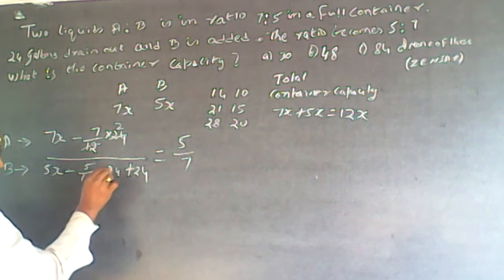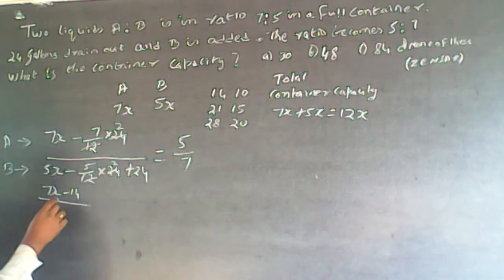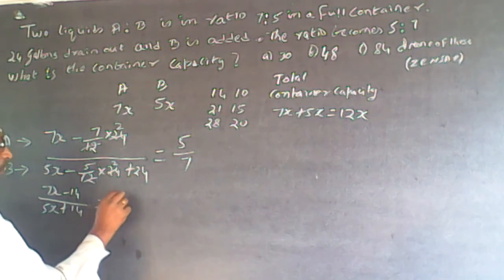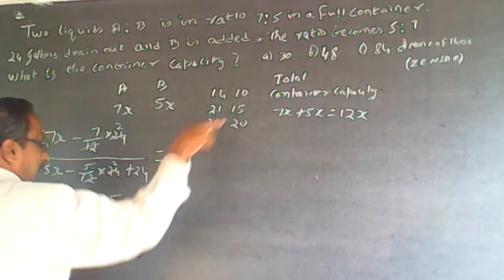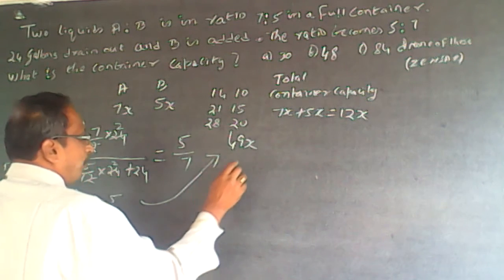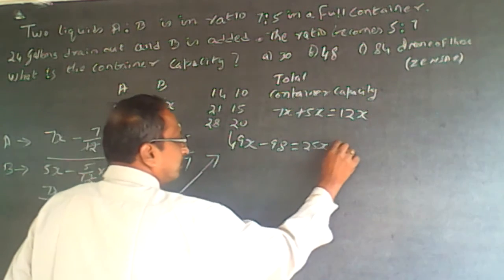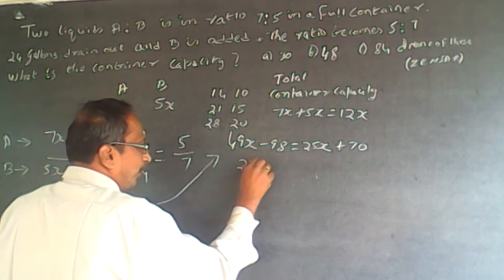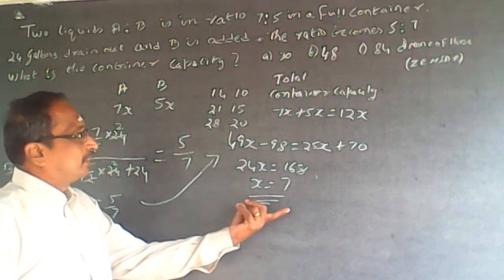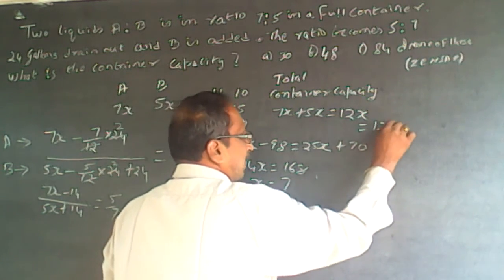So the equation is: (7x − 14) / (5x − 10 + 24) = 5/7. Cross-multiplying: 49x − 98 = 25x + 70. Therefore 24x = 168, so x = 7. Don't give the answer as 7 — x is not the answer. The total capacity is being asked, which is 12x = 12 × 7 = 84.